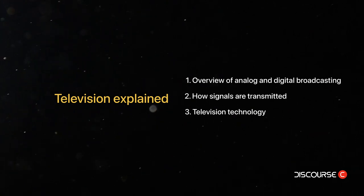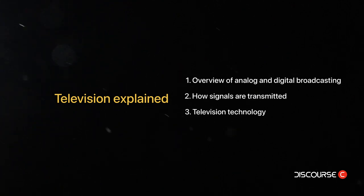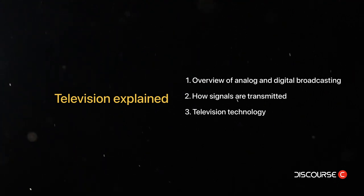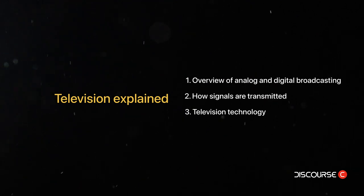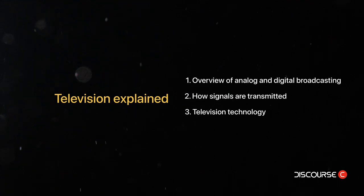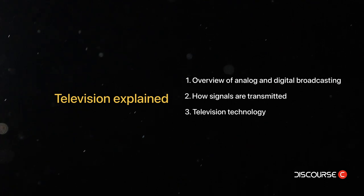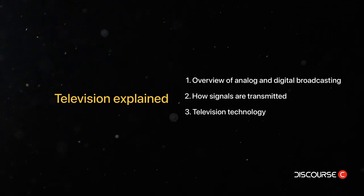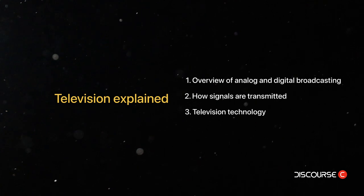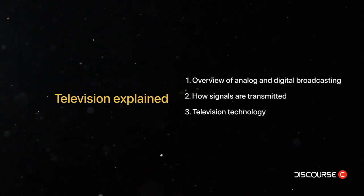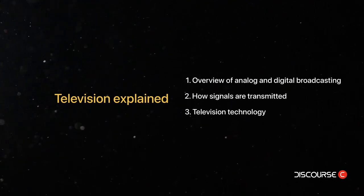LCD televisions provide a clear and bright image, but they can suffer from viewing angle limitations and slow response times, which can result in ghosting or blurring of fast-moving images. OLED televisions use organic materials to create light, which is emitted from each individual pixel on the screen. This allows for true black levels, as each pixel can be turned on or off independently, and also provides a higher contrast ratio than LCD displays. OLED televisions can also be made thinner and more flexible than LCD displays, and they provide a wider viewing angle and faster response time, which eliminates ghosting and blurring of fast-moving images.